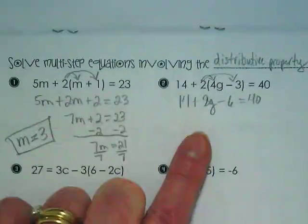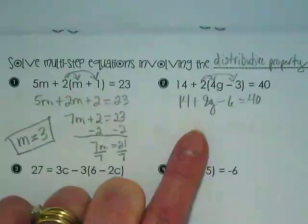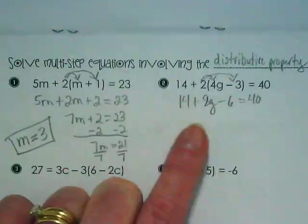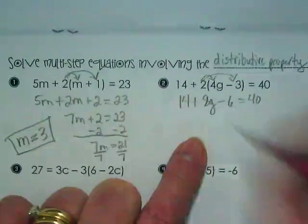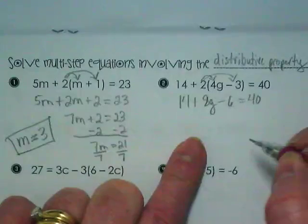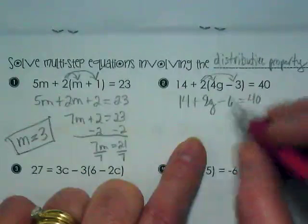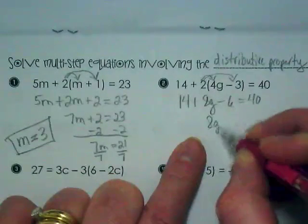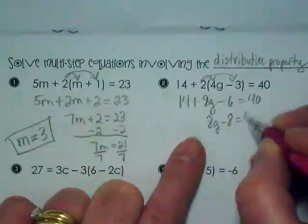What are my like terms on the left side of the equation? 14 and negative 6. What is 14 minus 6? 14 minus 6 is not 2. 8g minus 8 equals 40.